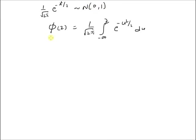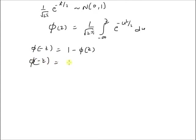The first property we want to study about this CDF is that we want to prove that Phi(−z) is equal to 1 minus Phi(z). So from the definition, Phi(−z) equals 1 over square root of 2π times the integral from minus infinity to minus z of e to the power of minus u squared by 2 du.